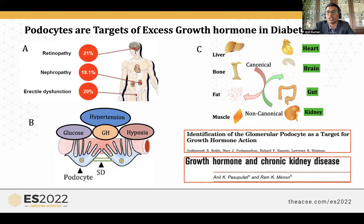However, in the recent past, non-canonical targets of growth hormone have been identified, such as cardiomyocytes, brain, gut, and kidney. The renal cells, particularly the podocytes, were shown to be a target of growth hormone action by my external laboratory. I then developed an interest in understanding the role of growth hormone in podocytes in general and the kidney in detail. When I started my laboratory at University of Hyderabad, India, I began working on how growth hormone implicates in chronic kidney disease.